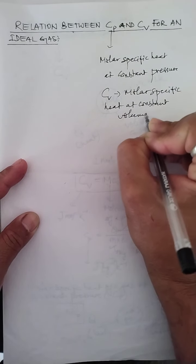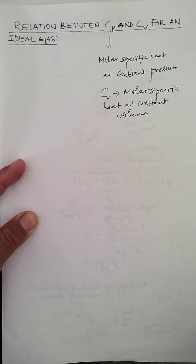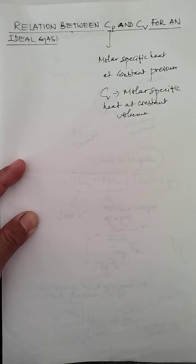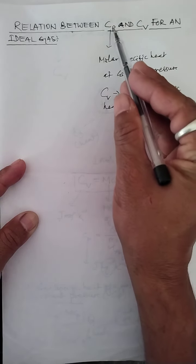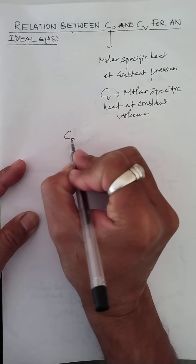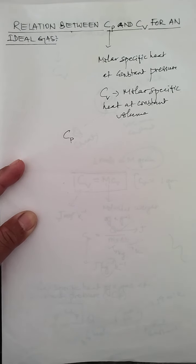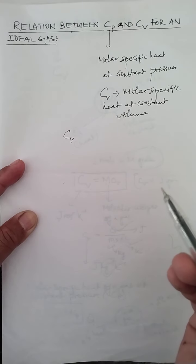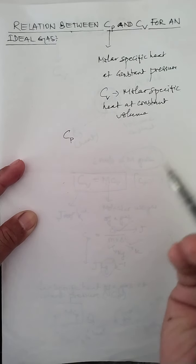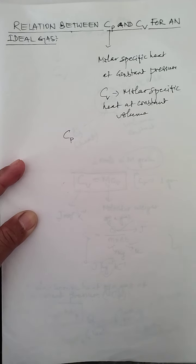When we use the word molar, it is for one mole of the gas, or for one gram molecule of the gas. Molar specific heat is defined as the amount of heat required to raise the temperature of one mole of a substance — here we are dealing with gas — through one degree Celsius or one Kelvin.